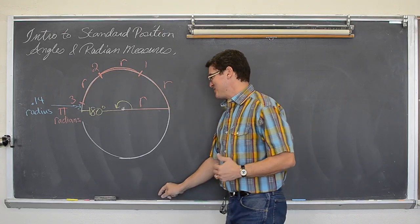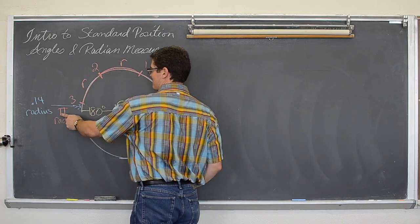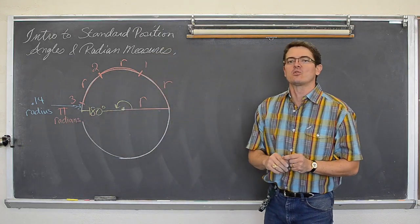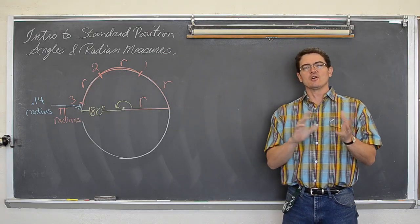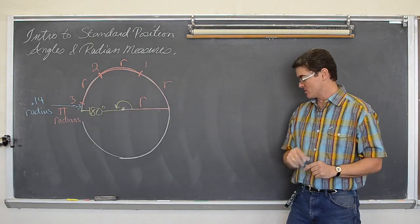All righty then! We are going to use this fact that we just learned, which is pi radians equals 180 degrees, to learn how to convert back and forth between degree measures and radian measures.